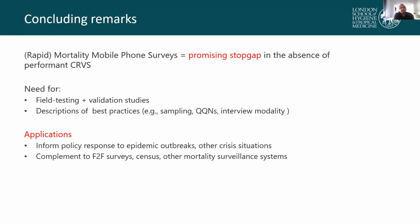In conclusion, we believe that mortality mobile phone surveys are a promising interim solution — a promising stopgap in the absence of more performant civil registration systems or mortality surveillance systems more generally. There is a need for field testing, validation studies, and a description of best practices in terms of sampling approaches, questionnaire modules, and interview modalities. If it works, there will certainly be applications to inform policy responses to epidemic outbreaks and possibly other crisis situations, as well as applications complementing more traditional data collection systems such as DHS surveys, censuses, and other mortality surveillance systems.